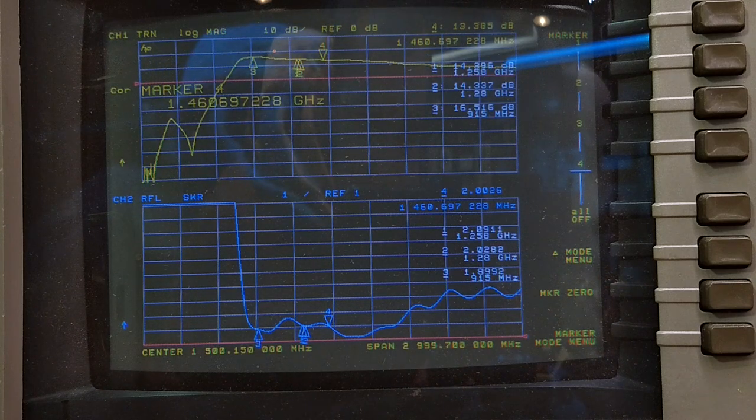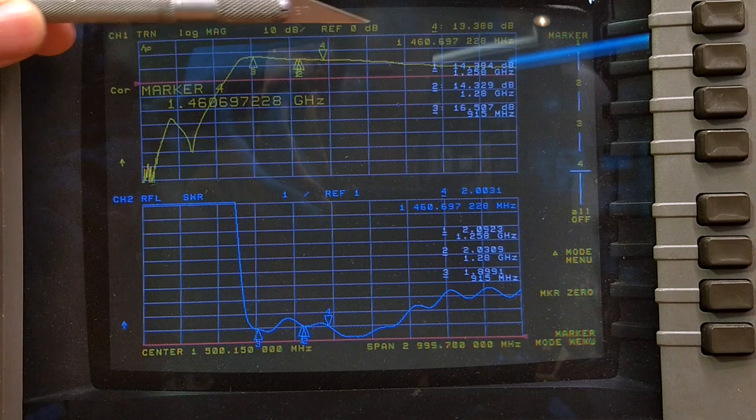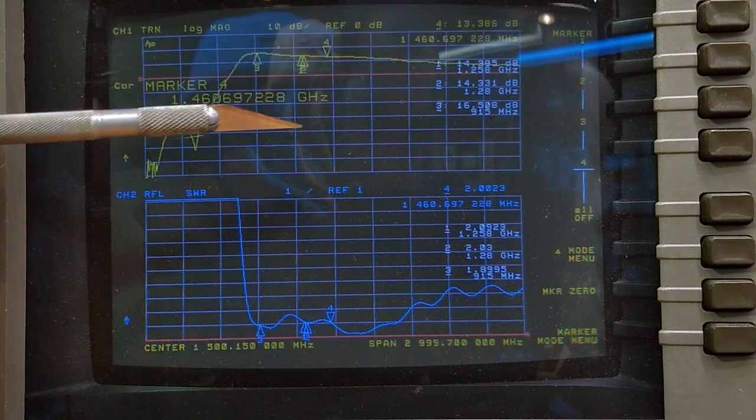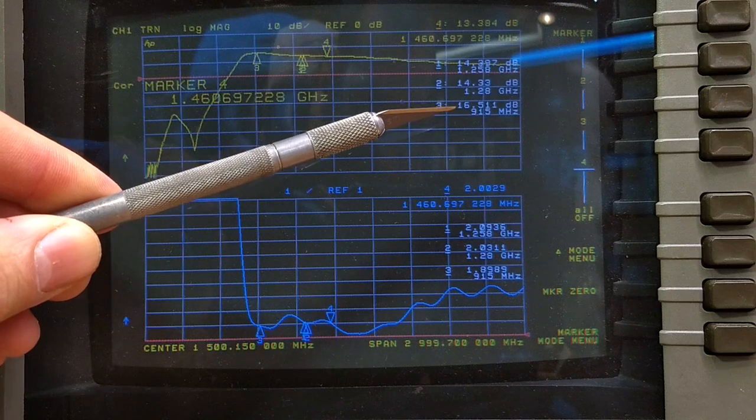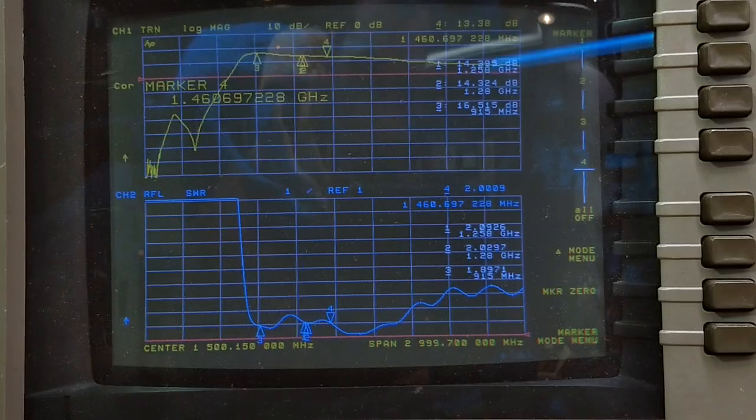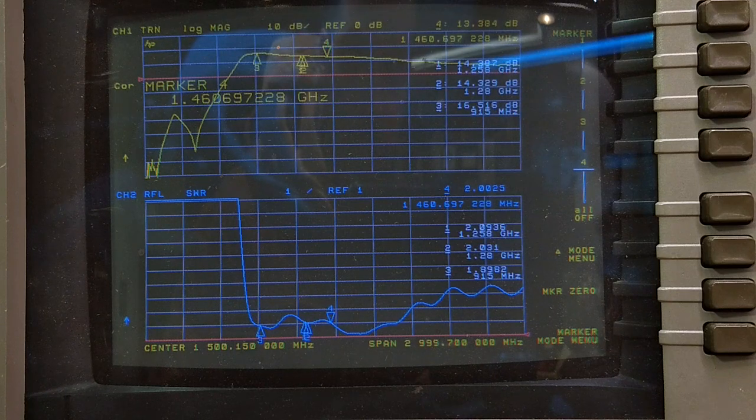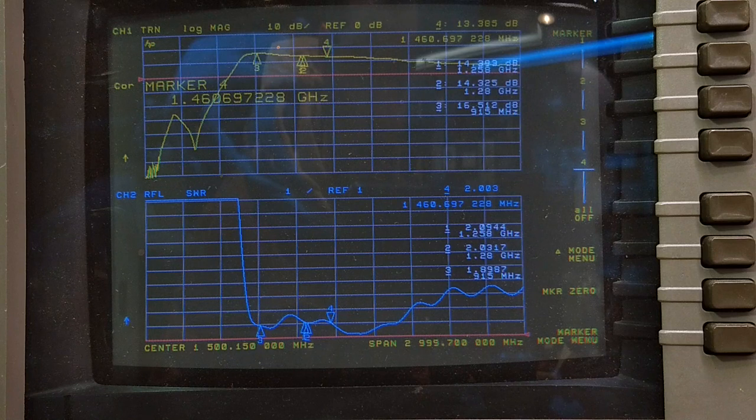Alright, so what do we got? We've got about 14 dB of gain in our desired passband, which is pretty good. 16 dB at 915. So this is definitely not something you want to use for Crossfire, or well, with a Crossfire radio link, because we already have enough problems filtering it out.